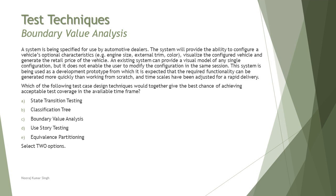A system is being specified for use by automotive dealers. The system will provide the ability to configure a vehicle's optional characteristics, for example engine size, external trim color, visualize the configured vehicle, and generate the retail price. An existing system can provide a visual model of any single configuration but does not enable the user to modify the configuration in the same session. The system is being used as a development prototype for which it is expected that the required functionality can be generated more quickly than working from scratch, and time scales have been adjusted for rapid delivery.